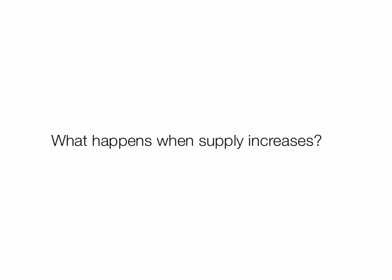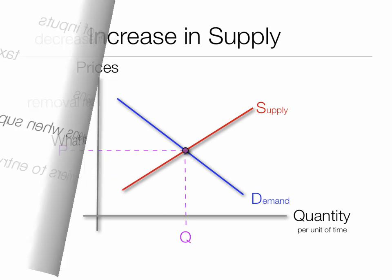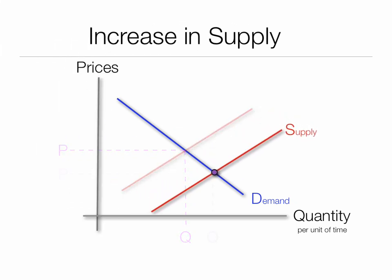So what happens when supply increases? There's been a decrease in the price of inputs, a tax cut or tax decrease, there are more suppliers, barriers to entry fall, there's been removal of regulations, and so on and so forth. When supply increases, the supply curve shifts downward and to the right, and prices fall.